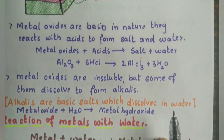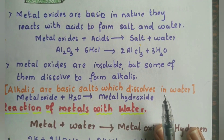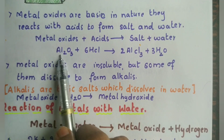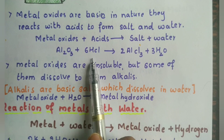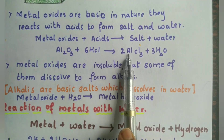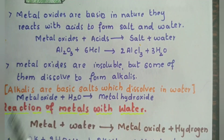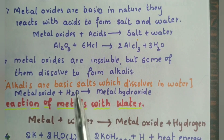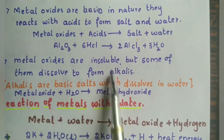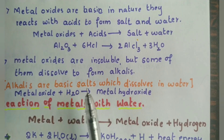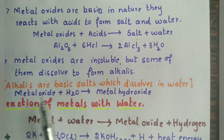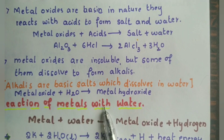Metal oxides are basic in nature. For example, aluminium oxide: when it reacts with hydrochloric acid it forms aluminium chloride and water — salt and water — that is why it is basic in nature. Metal oxides are mostly insoluble, but some metal oxides dissolve to form alkalis. Alkalis are basic salts — they are basic in nature and dissolve in water. When a metal oxide reacts with water it forms metal hydroxide.